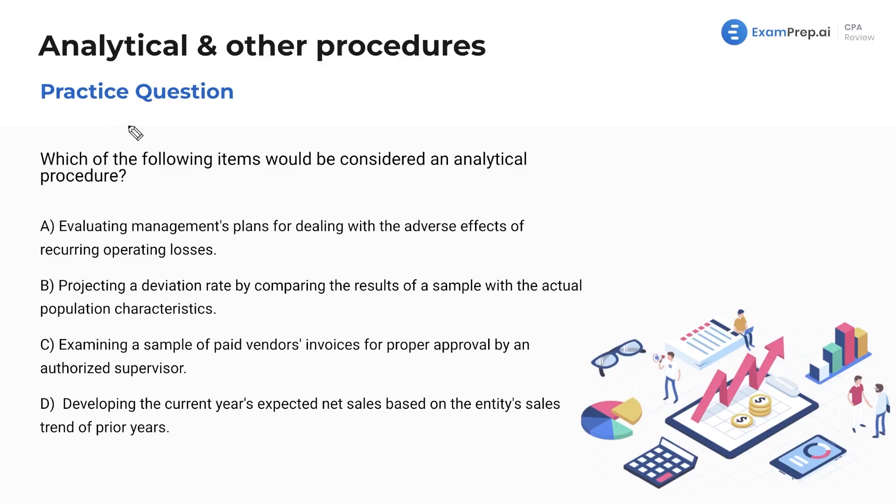Starting off, which of the following items would be considered an analytical procedure? Now this is just my judgment based on a lot of questions I've seen. This is probably going to show us an analytical procedure and then show us a bunch of substantive procedures, which we know usually can be different there. So we got to watch out for that. That's a possible trick. We could also possibly see some tests of controls.